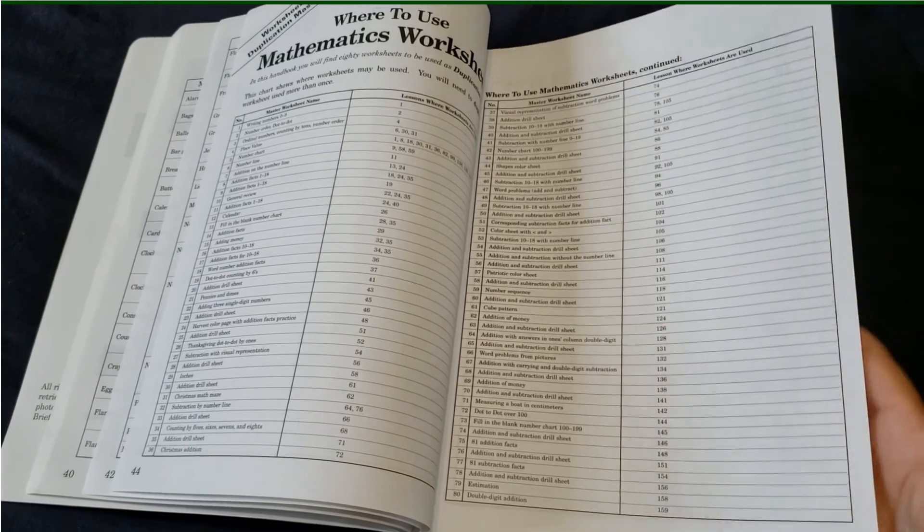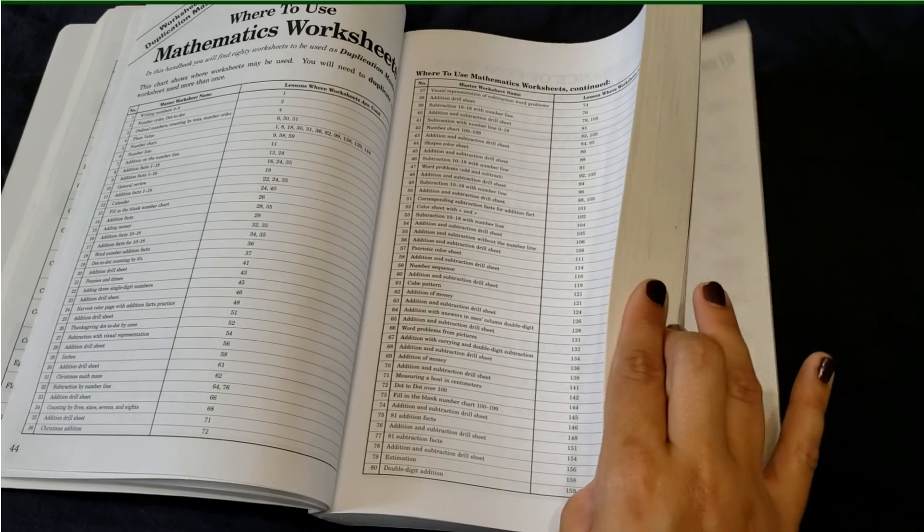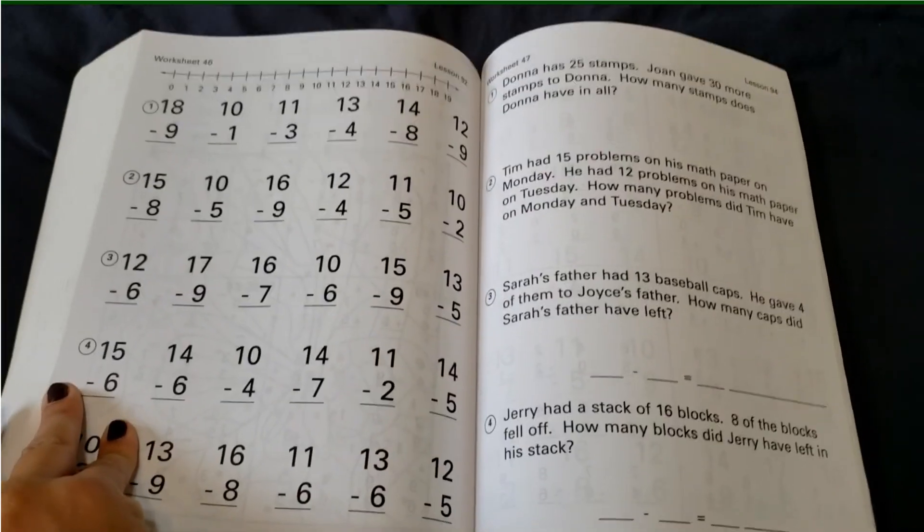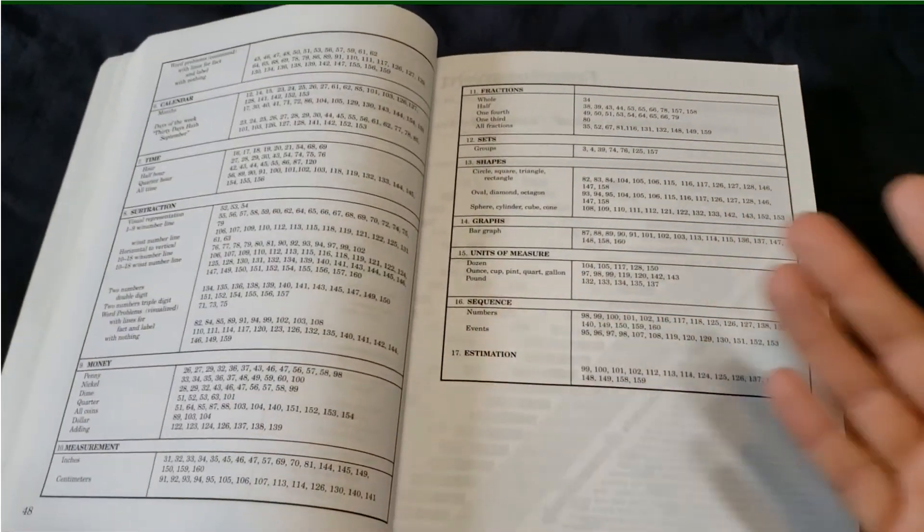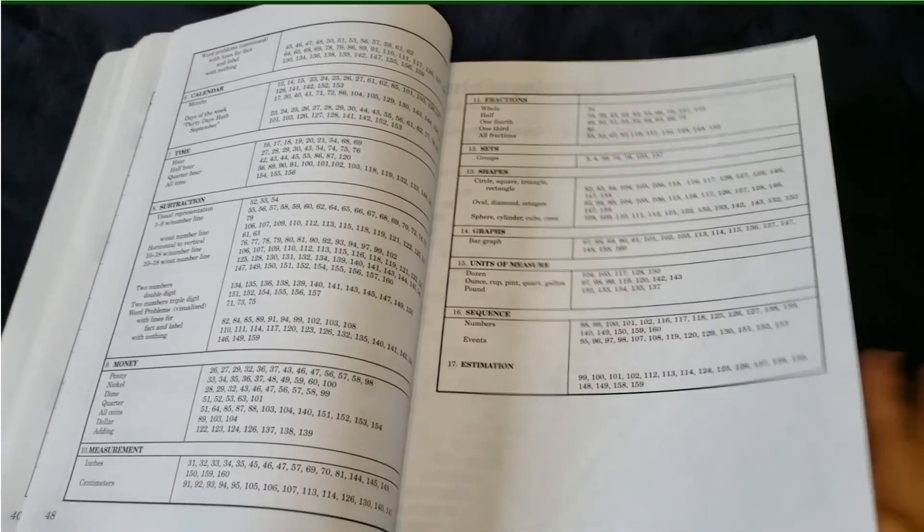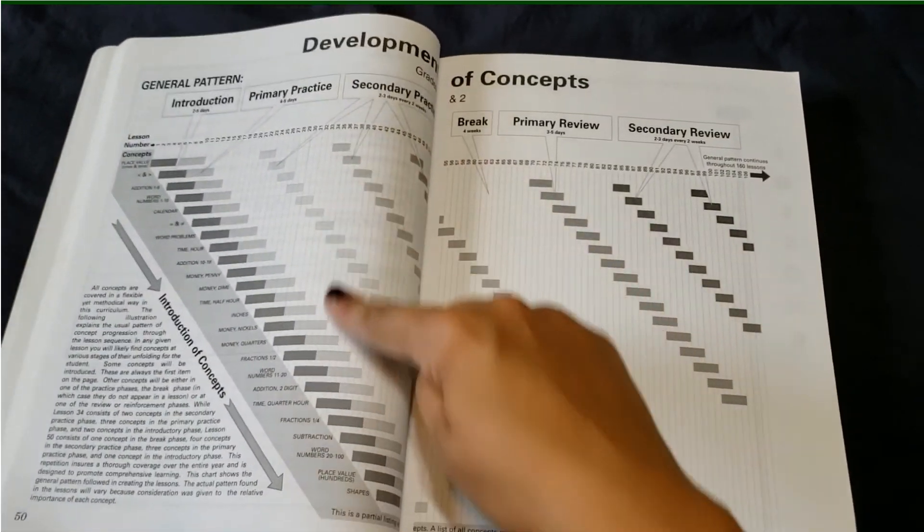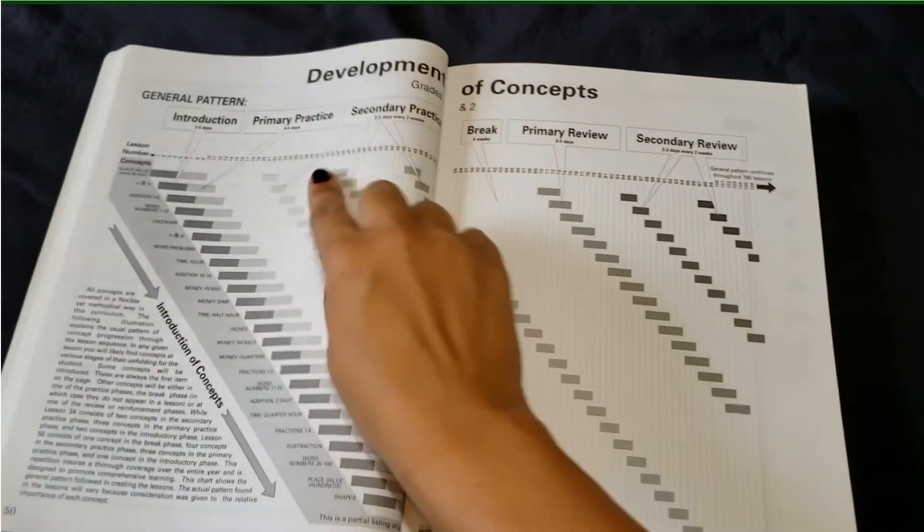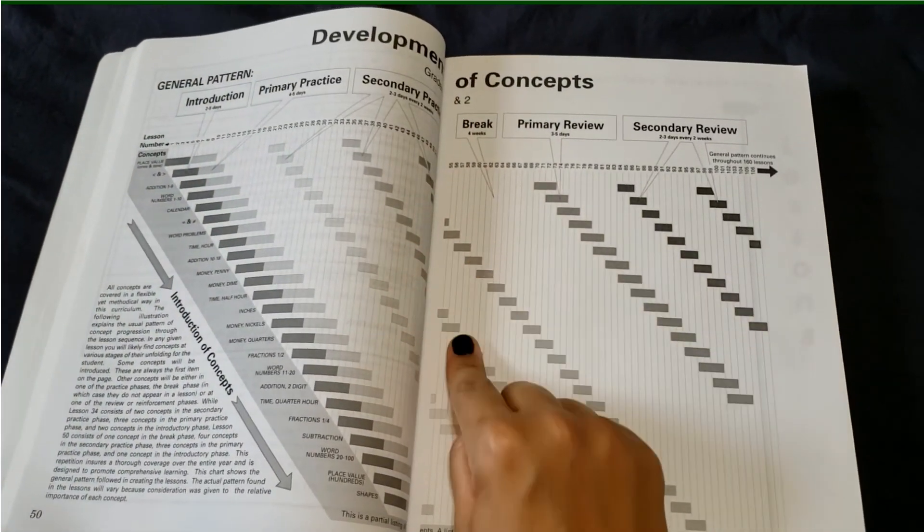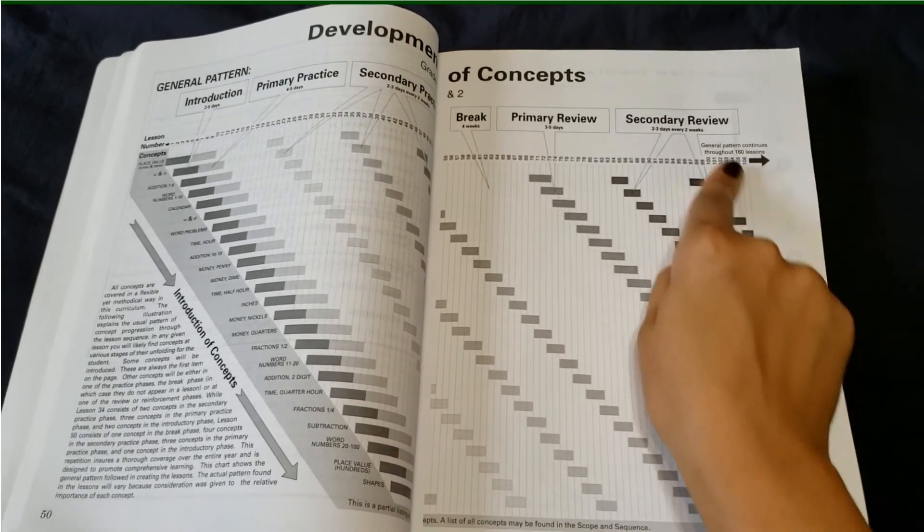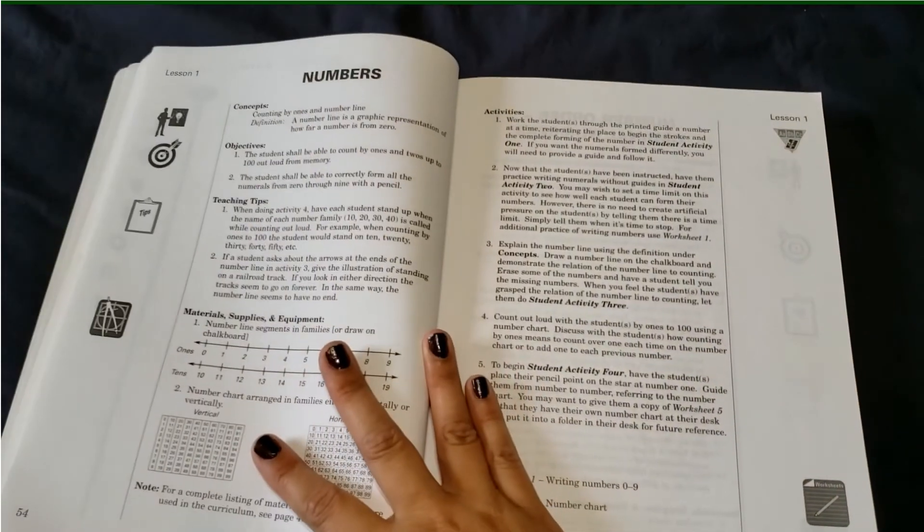And then the mathematic worksheets, which are at the back of the book. And then you can make as many copies of as you need to throughout the year or for multiple students. If you have twins or kids in the same grade or same level of math. And then this is a great graph to show you when the concepts are introduced, initially practiced, brought back. There's a break from it, then a review, and then a secondary review. And typically after that, it should be mastered.